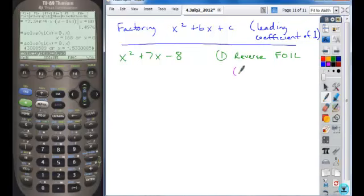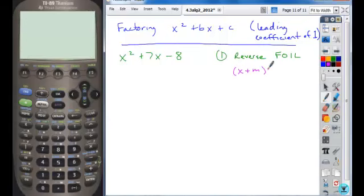If you took some binomial factors and FOILed them through, FOIL means you multiply the first terms together, so that gives you x², and you multiply the outer terms together, that's n times x, then you multiply the inner terms together, that's m times x, and then you multiply the last terms together, that's m times n.